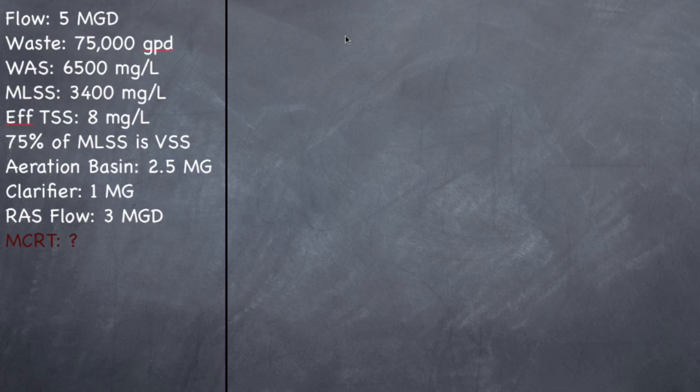All right, MCRT. MCRT stands for mean cell residence time, and it means the amount of time that a cell or a bug is going to spend in your system before either being discharged as waste activated sludge or discharged out the back gate as your effluent TSS.